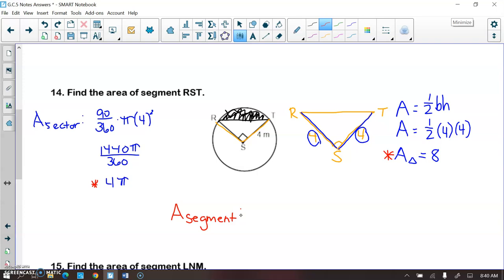So in exact format, what I would do is I would take the area of my sector and subtract the area of my triangle. Now I actually cannot combine these together because the 8 does not have a pi attached to it, and our units are meters, so for area it would be meters squared. So if I asked you for the exact area of the segment, this is what you would give me.